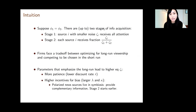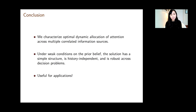To conclude: what we've done in this paper is characterize the optimal dynamic allocation of attention across multiple correlated informational sources. Under weak conditions on the prior belief, the solution turns out to have a simple structure with interesting properties like history independence and robustness across decision problems. Hopefully I've also convinced you that the characterization is useful for looking at a variety of applications. Thank you so much again for coming and for the invitation.